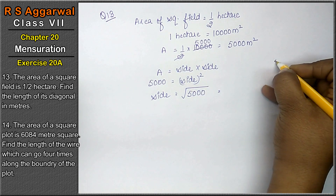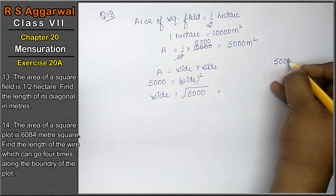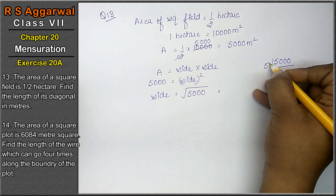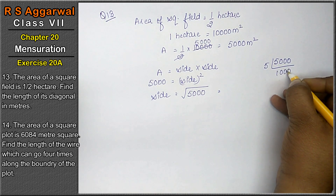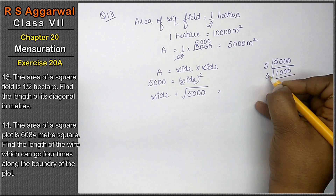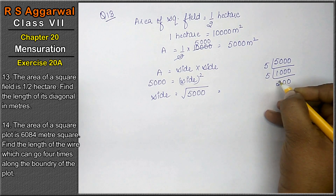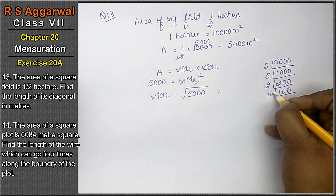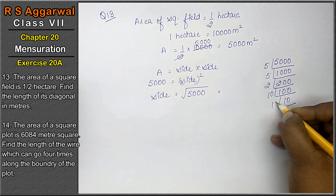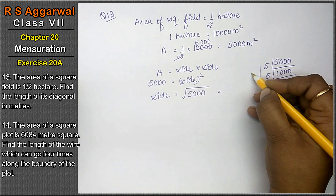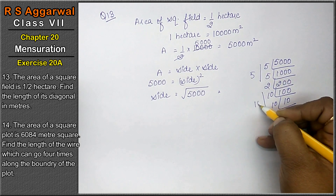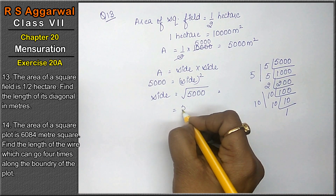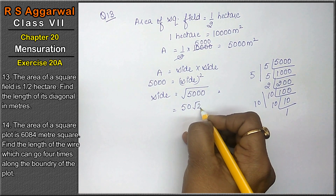तो side = √5000. 5000 को factor करने पर: 5 × 5 × 2 × 10 × 10 = 5000. तो 5 बाहर आ गया, 10 बाहर आ गया. So side = 50√2 meters.